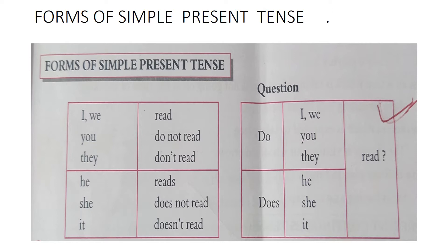'Does she read regularly?' — interrogative in simple present. If you try to jumble the given table, you can frame wrong sentences. For example: 'Does they read regularly?' is wrong; the correct sentence is 'Do they read regularly.' 'Do he read regularly?' is wrong; correct is 'Does he read regularly.' 'She read regularly' is wrong; correct is 'She reads regularly.'